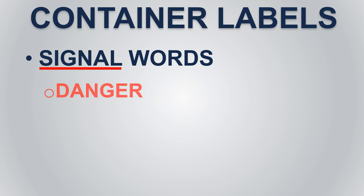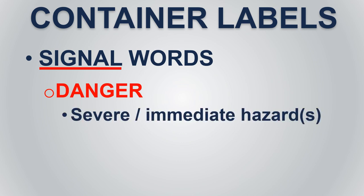The signal word danger indicates a relatively severe or immediate hazard. For example, a material that could explode or burn rapidly when ignited would be marked with the signal word danger, as would a chemical that is highly poisonous.